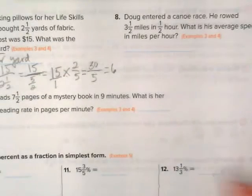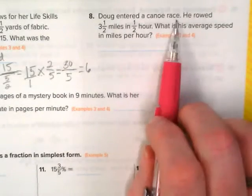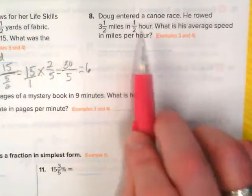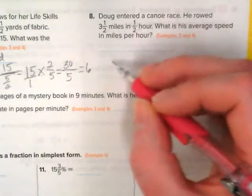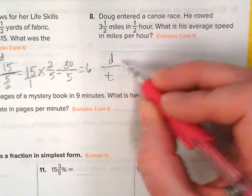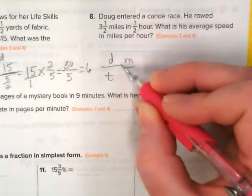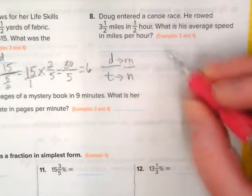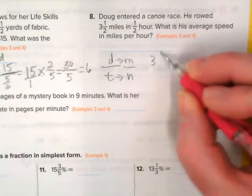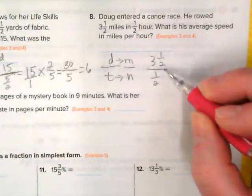A couple of other word problems before I have you do some practice today. Doug entered a canoe race. He rowed three and a half miles in one half hour. Remember we're doing distance problems, it's distance over time. In this case we're going to have miles over hours because that's the distance and that's the time. So we have three and a half miles over half an hour.